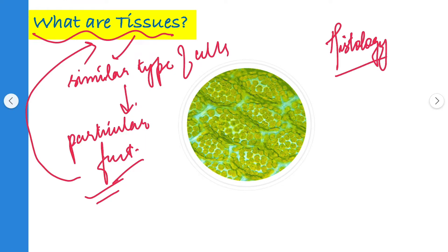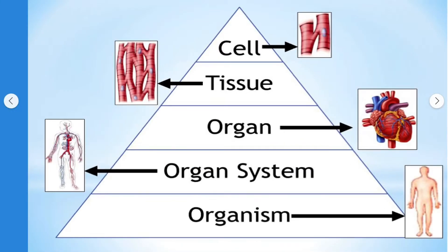Tissues are similar type of cells — the structure is similar and they perform similar type of functions. When many cells get together with each other, they form the tissues. And when many tissues get together with each other, they form the organs.